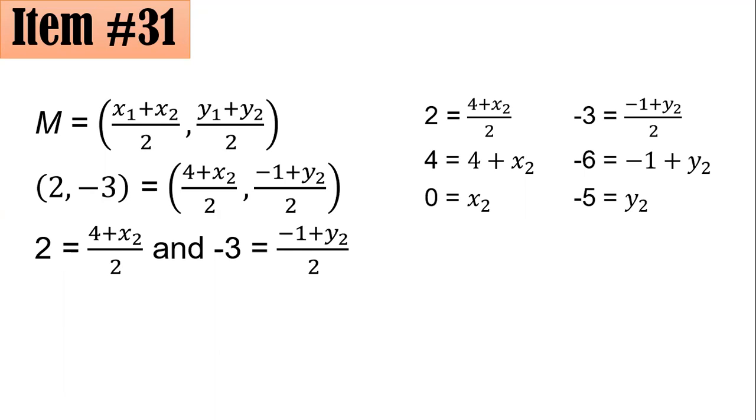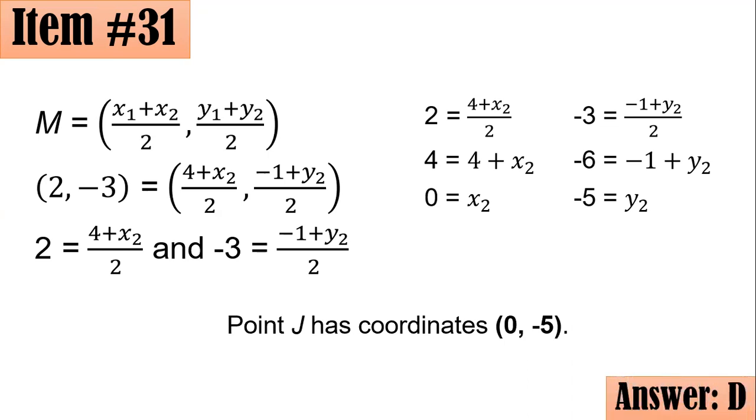Since we have the value of x and y now, therefore, combining them into a single point, you have J with coordinate (0, -5), and that is letter D.